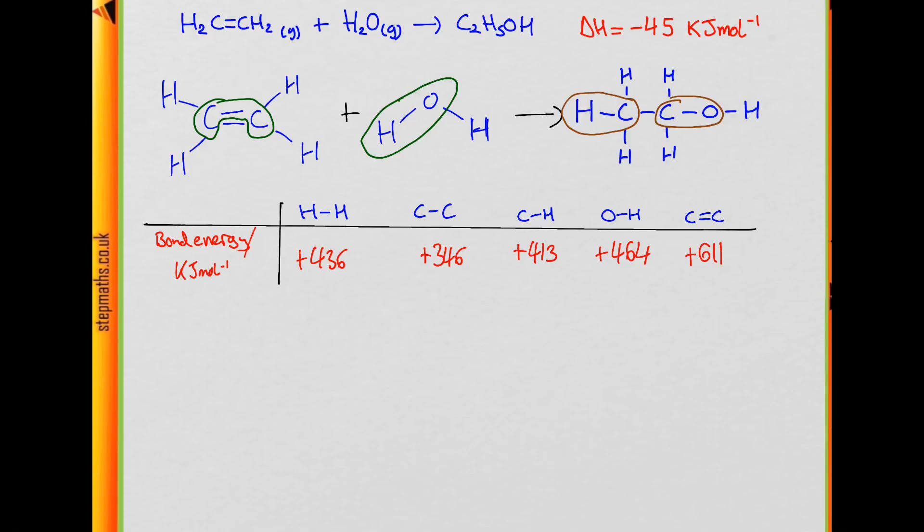Now we need to find out the energy of the bonds broken and the bonds formed. So the energies of the bonds broken can be done by adding up the energies of the various bonds. So we have 464 coming from breaking the O-H bond plus 611 minus 346. So why do we do this?